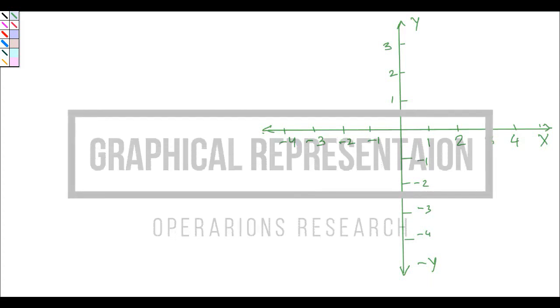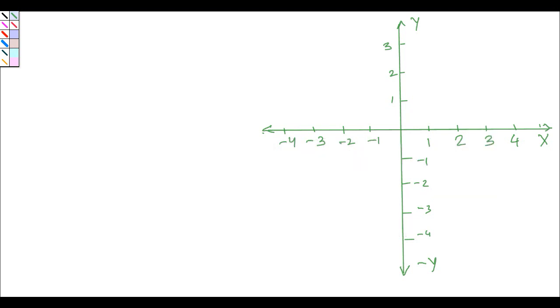This is a quick tutorial on how to find the maximum or greater than area and less than area in case of an equation of this shape: x minus 2y less than or equal to zero.